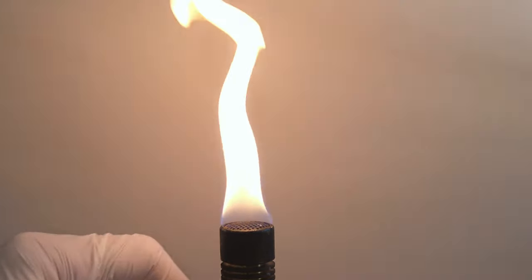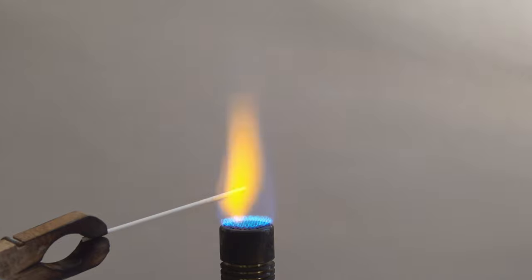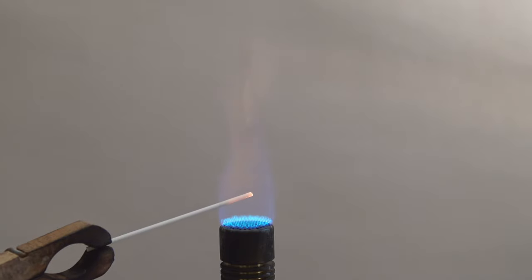To find out whether sodium and potassium are present, the flame test can be done. For this, a platinum wire or a magnesia stick is used. This is heated for a short while to lower the usual contamination with sodium salts.